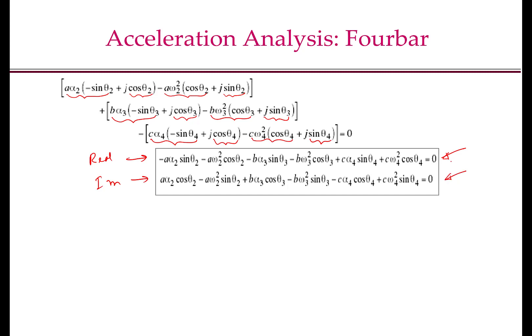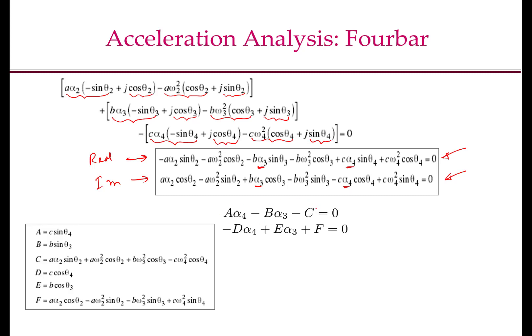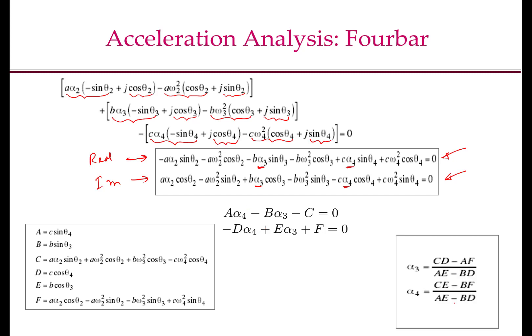If you identify the unknowns in these equations, you will see that they are alpha 3 and alpha 4. Everything else — the squared terms, the sin(theta) and cos(theta) terms — are constants, because we already know omega 2, omega 3, omega 4 and theta 2, theta 3, theta 4. So what we essentially have is a system of two linear equations in two unknowns, which can be written in matrix form with coefficients a, b, and c as shown. Solving two equations in two unknowns is a standard exercise, and the solution is of the following form.